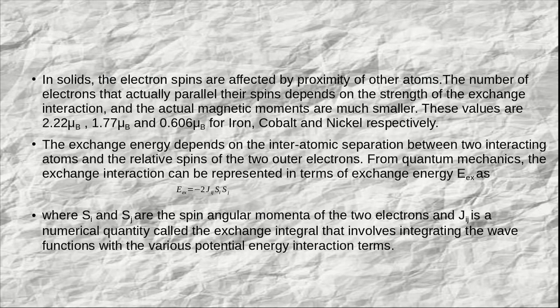In solids, the electron spins are affected by the proximity of other atoms. The number of electrons that actually align their spins depends on the strength of the exchange interaction, and the actual magnetic moments are much smaller. For iron, instead of 4 μB, it actually possesses 2.22 μB. For cobalt, instead of 3 μB, it possesses 1.77 μB. For nickel, instead of 2 μB, it possesses 0.606 μB.